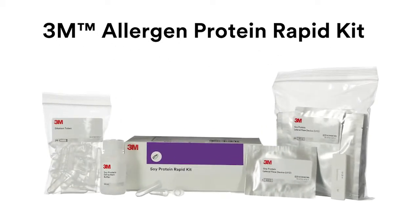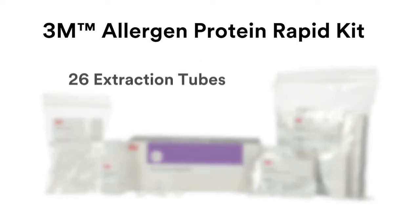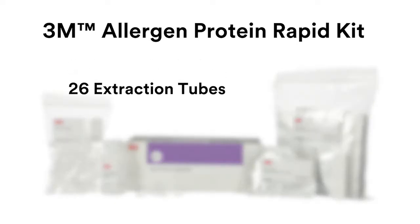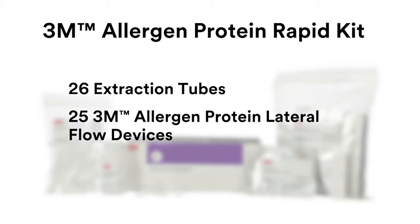The 3M Allergen Protein Rapid Kit contains the following components: 26 extraction tubes to prepare extracted samples, 25 individually packaged